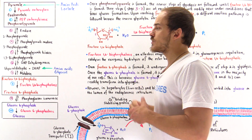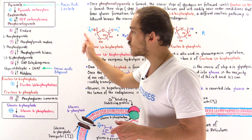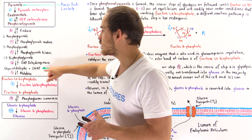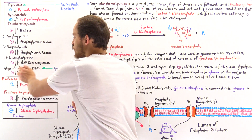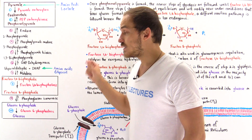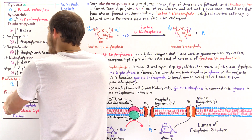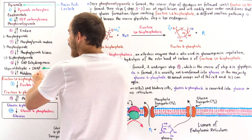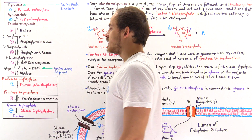Phosphoenolpyruvate is transformed into 2-phosphoglycerate by enolase. Then 2-phosphoglycerate is transformed into 3-phosphoglycerate by phosphoglycerate mutase. Then 1,3-bisphosphoglycerate is broken down into glyceraldehyde-3-phosphate and DHAP, where DHAP stands for dihydroxyacetone phosphate. In step seven, these two molecules are combined via aldolase to form fructose 1,6-bisphosphate.